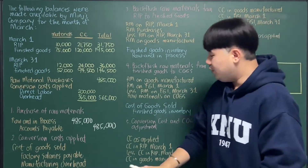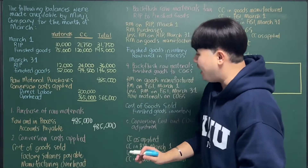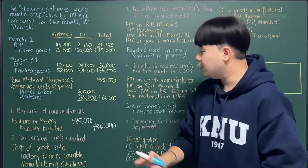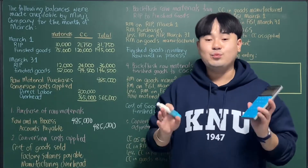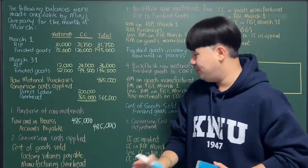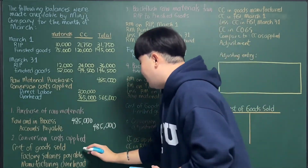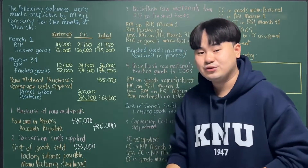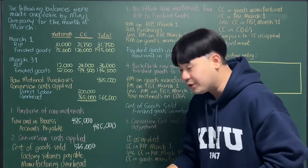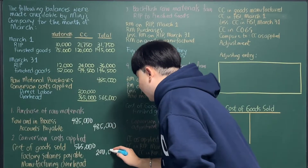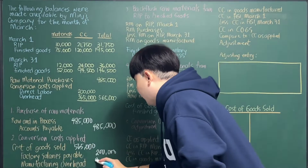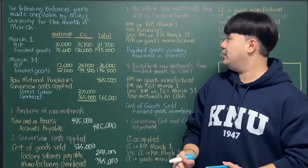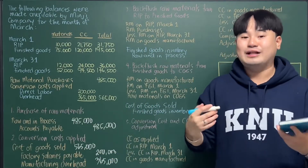For our next entry, which is the application of conversion cost: we have direct labor of $200,000 and applied overhead of $365,000, totaling $565,000. We put that directly as a debit to cost of goods sold for $565,000, then credit factory salaries payable for $200,000 and manufacturing overhead for $365,000. Now that we have established these entries, we are ready for the backflush calculations.